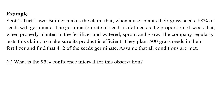For part A, we construct a 95% confidence interval for this observation. Making that confidence interval, we put in our X, our N, and our C level into our calculator. We get out that confidence interval: 0.791 to 0.857. The calculator gives us that nice and easy.